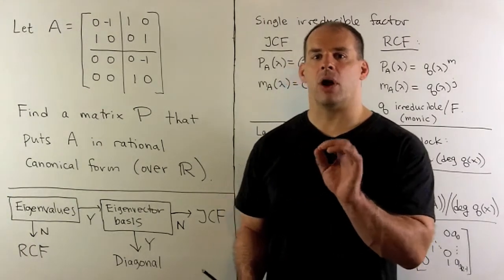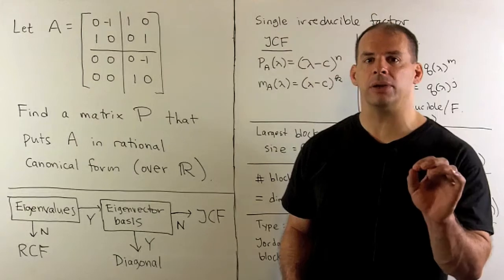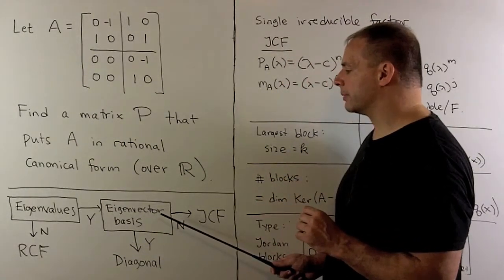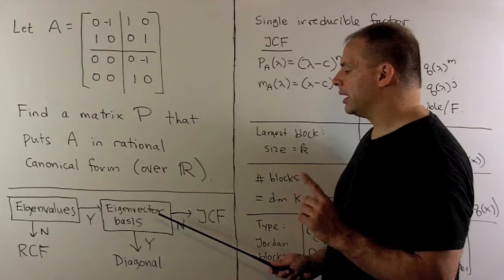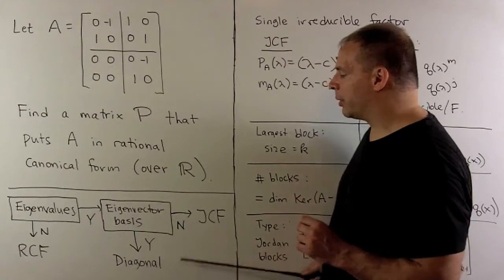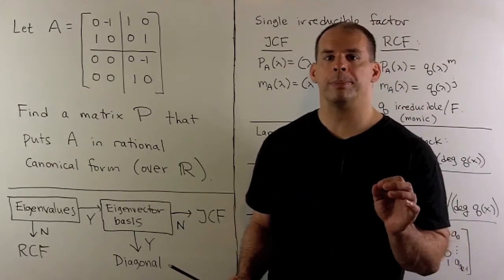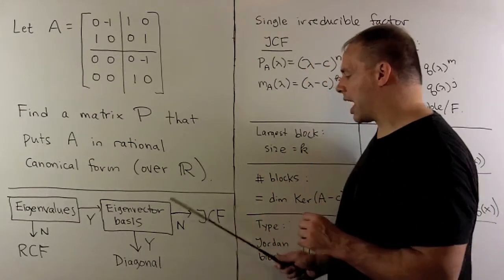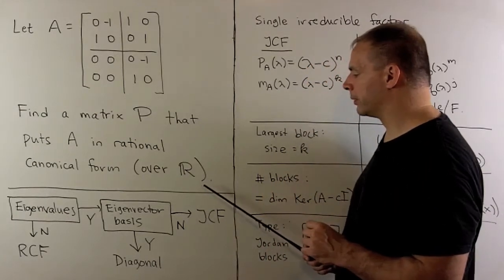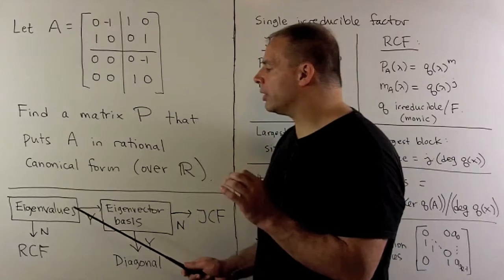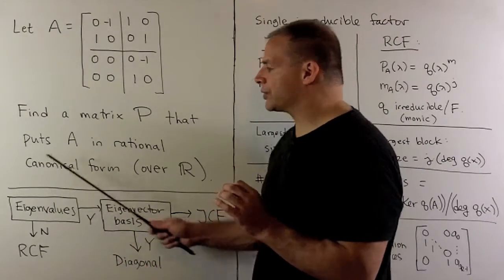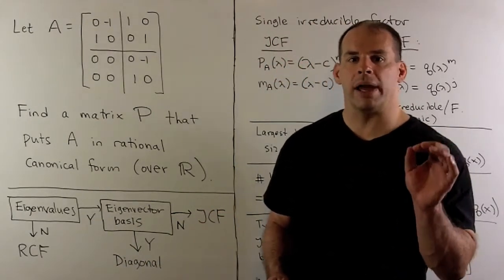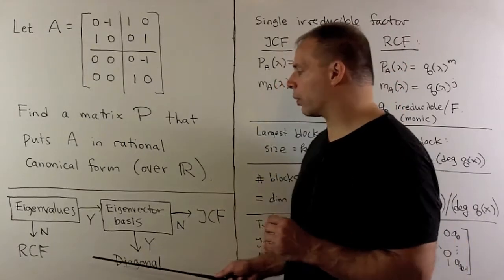If all the eigenvalues are in our base field, we would ask whether there is a basis of eigenvectors. If so, we could put our matrix in diagonal form. If not, we could still put it in Jordan canonical form. If we're unable to find all of our eigenvalues in the base field, we could still put our matrix in rational canonical form.